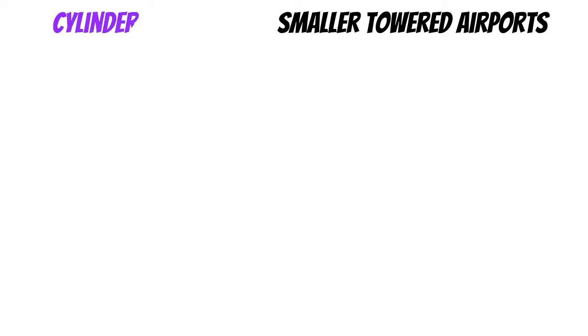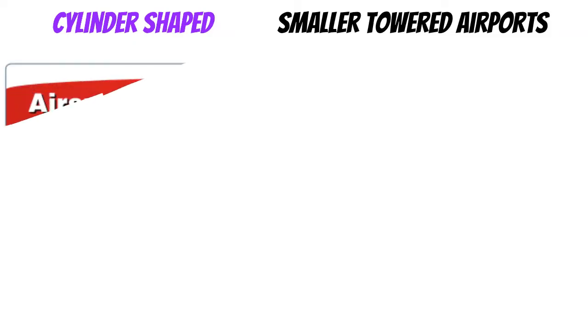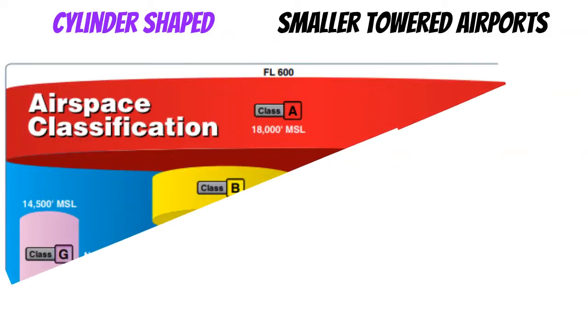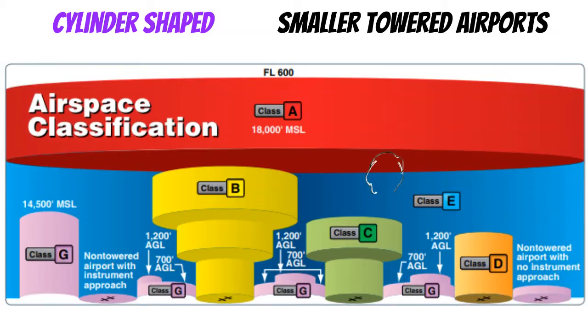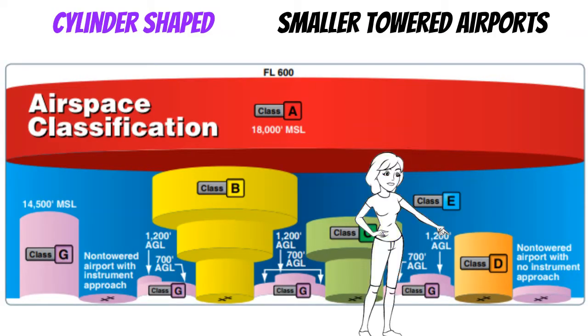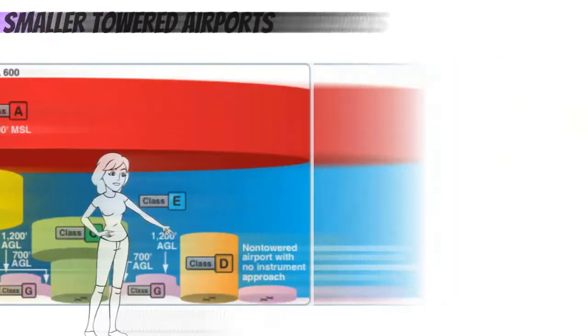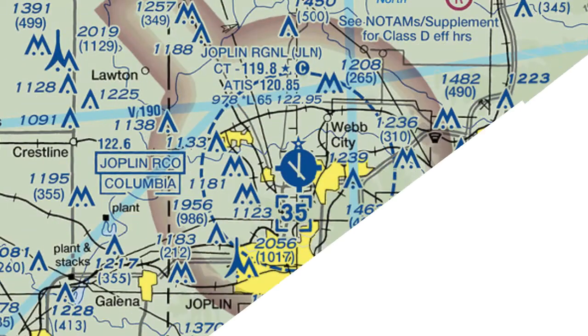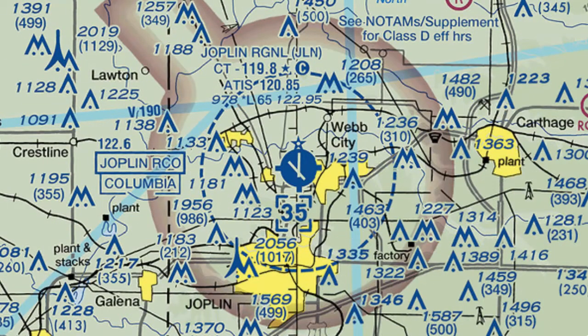Class D airspace is controlled airspace that surrounds smaller towered airports. Usually it's cylinder-shaped with a 5-statute mile radius that starts at the surface and goes up to 2,500 AGL. But to get the exact specs, we need to look at a VFR sectional of the airport we want to fly into.